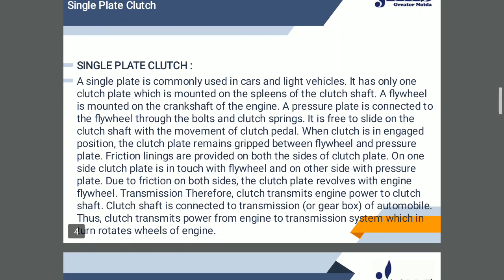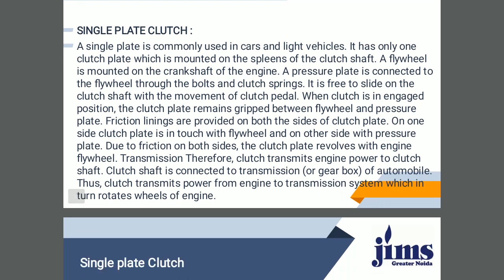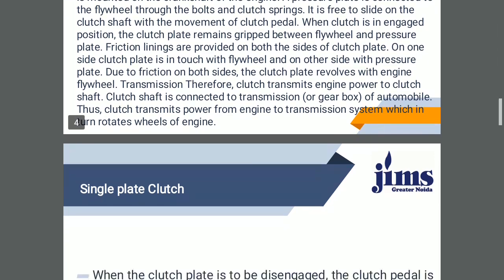When the clutch is in the engaged position, the clutch plate remains gripped between the flywheel and pressure plate. Friction linings are provided on both sides of the clutch plate — one side in touch with the flywheel and the other side with the pressure plate. Due to friction on both sides, the clutch plate revolves with the engine flywheel, and therefore transmission takes place. The clutch transmits engine power to the clutch shaft, which is connected to the transmission of the automobile.